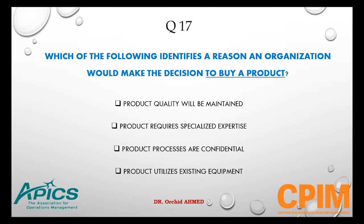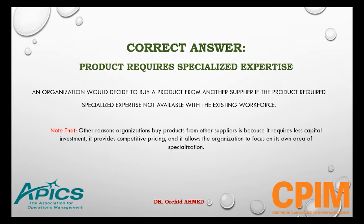Question number 17. Which identifies a reason an organization would make the decision to buy a product? Options: product quality will be maintained, product requires specialized expertise, product processes are confidential, or product utilizes existing equipment. The right answer is product requires specialized expertise. An organization buys from another supplier if the product requires expertise not available in the existing workforce — other reasons include less capital investment, competitive pricing, and focus on core specialization.